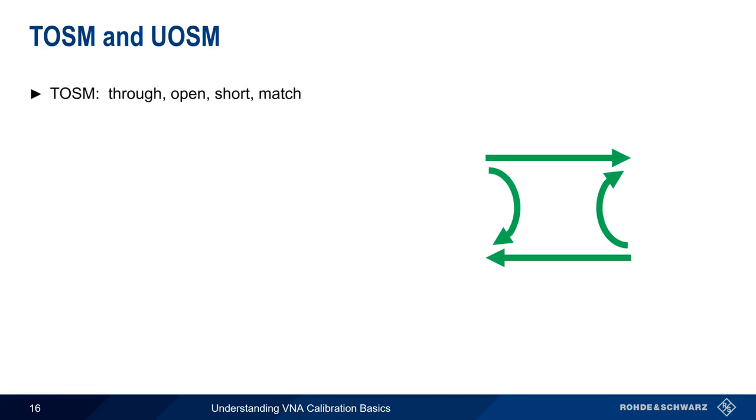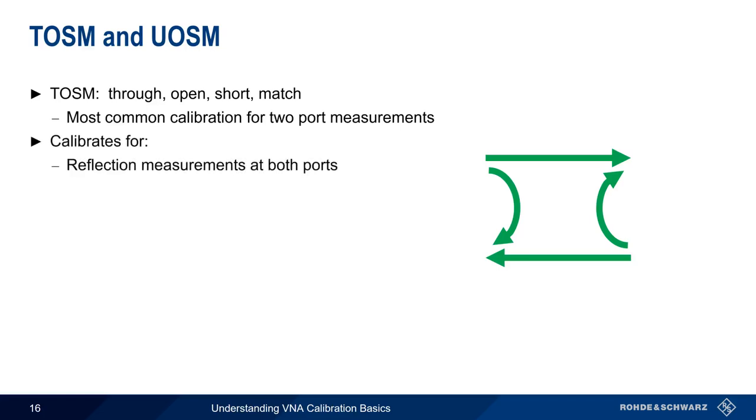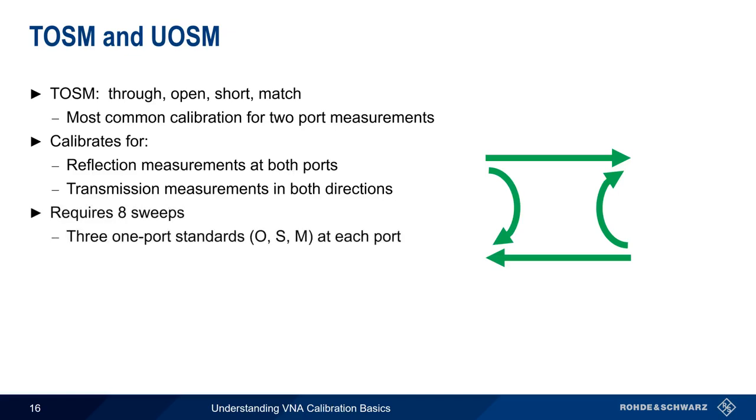Through-open-short match is by far the most common calibration type for two-port measurements. Running a through-open-short match calibration provides calibration for reflection measurements of both ports, as well as transmission measurements in either direction between these ports. So after running this calibration, we can make any S-parameter measurements. The only downside of the through-open-short match calibration is that it can be somewhat time-consuming and labor-intensive. Eight sweeps are required. The three one-port standards have to be connected one at a time to each port, and then the through has to be connected between the two ports and swept in both directions. Part of the appeal of auto calibration units is that the through-open-short match can be run in just a few seconds without having to manually connect and disconnect the calibration standards.